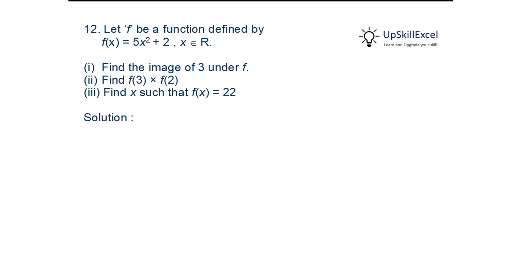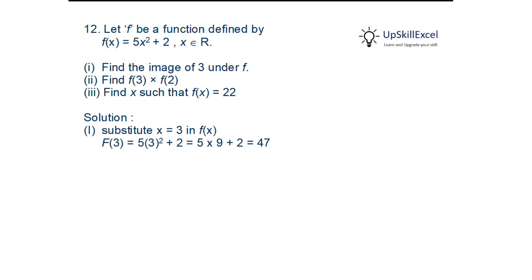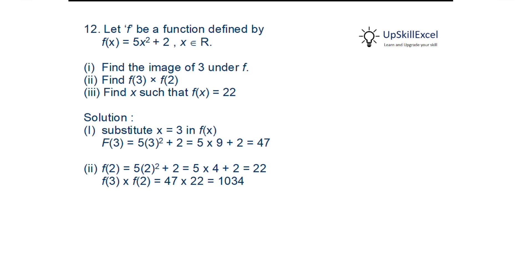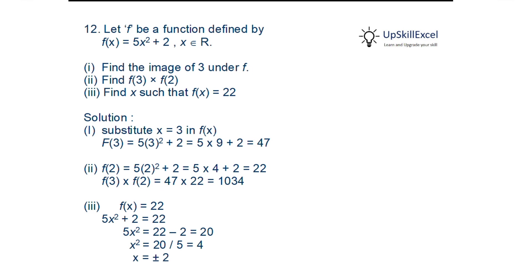Let f be defined by f(x) = 5x²+2. Find f(3), then f(3)·f(2), then find x when f(x) = 22. Substituting x = 3: f(3) = 5(9)+2 = 47. f(2) = 5(4)+2 = 22, so f(3)·f(2) = 47×22 = 1034. Setting 5x²+2 = 22 gives x² = 4, so x = ±2.